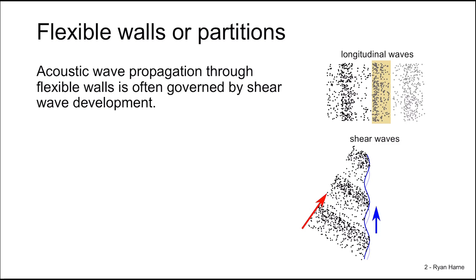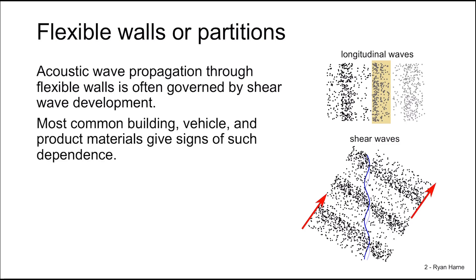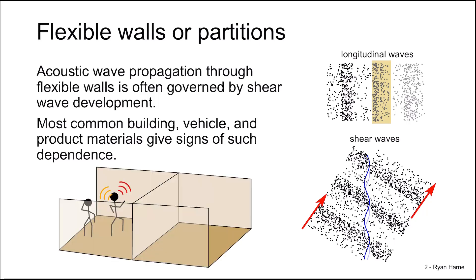So when an acoustic wave is incident upon a solid structural surface, shear waves will develop in the structure which re-radiate as sound on the other side of the wall. Many common building, vehicle, and product materials give signs of this type of dependence of wave propagation. So if we wish to determine the full picture of sound transmission through panels, we need to study both longitudinal and shear wave development.